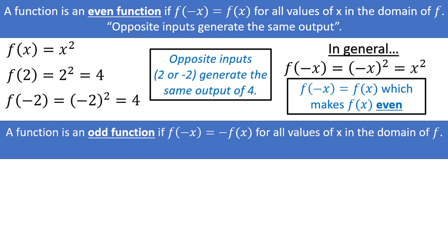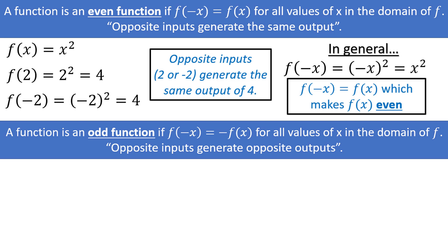A function is an odd function if f of negative x is equal to negative f of x for all values of x within the domain of f. This means if you plug in the negative version of a number, you will get the same output you would have gotten with the positive version, but the sign is flipped. An easy way to think of this is that opposite inputs generate opposite outputs.